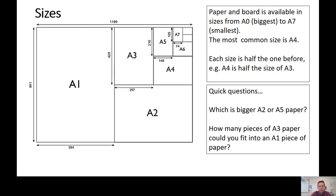Question number one: which is bigger, A2 or A5 paper? A2 is the bigger size. Remember, the smaller the A number, the bigger the paper. You may also have used the diagram to compare the sizes. Question number two: how many pieces of A3 paper could you fit into an A1 piece of paper? A bit more tricky — the answer is four pieces. You could fit four A3 pieces of paper into one A1 piece of paper.